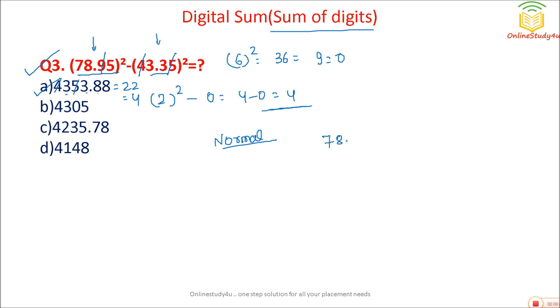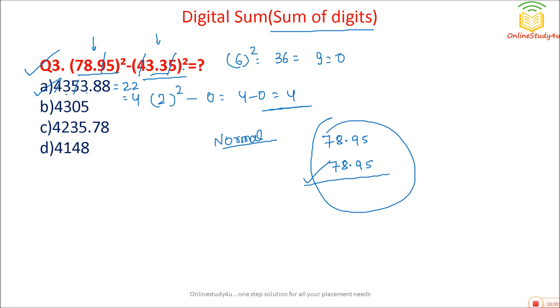If you were to solve this by the normal method — 78.95 into 78.95 and then find the difference — it would take a minimum of five to six minutes. You can try it after watching this video.